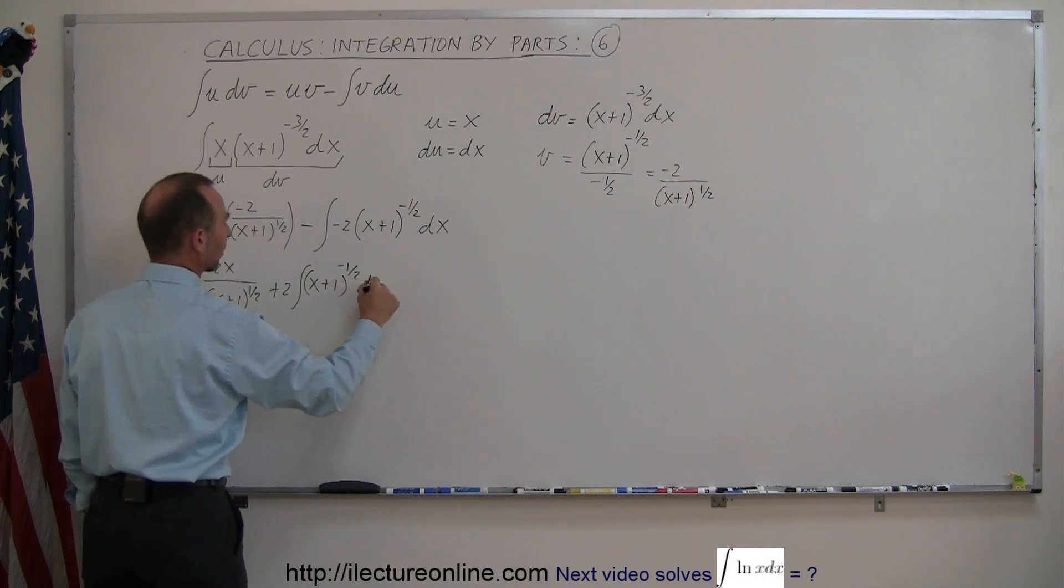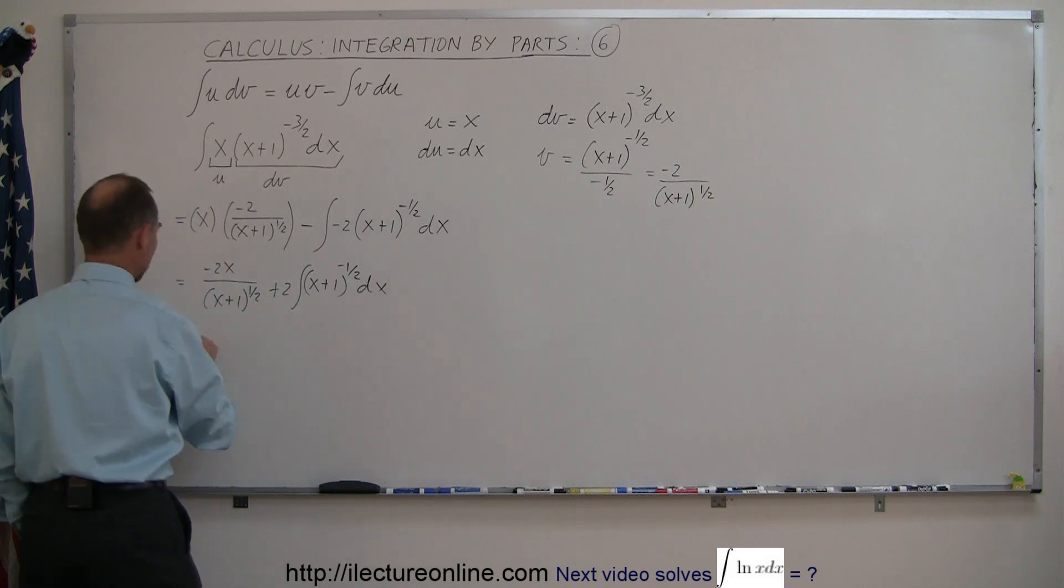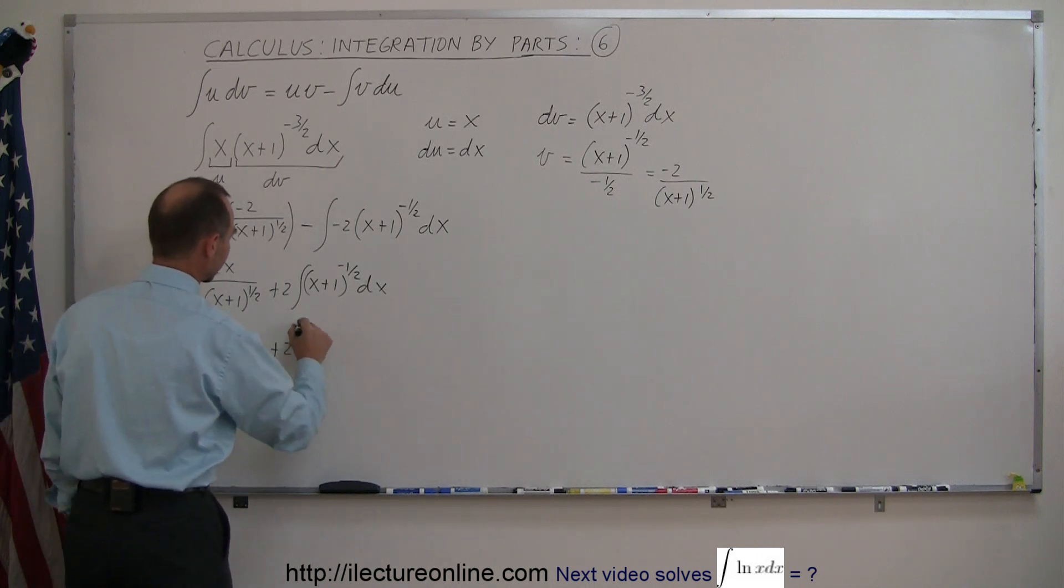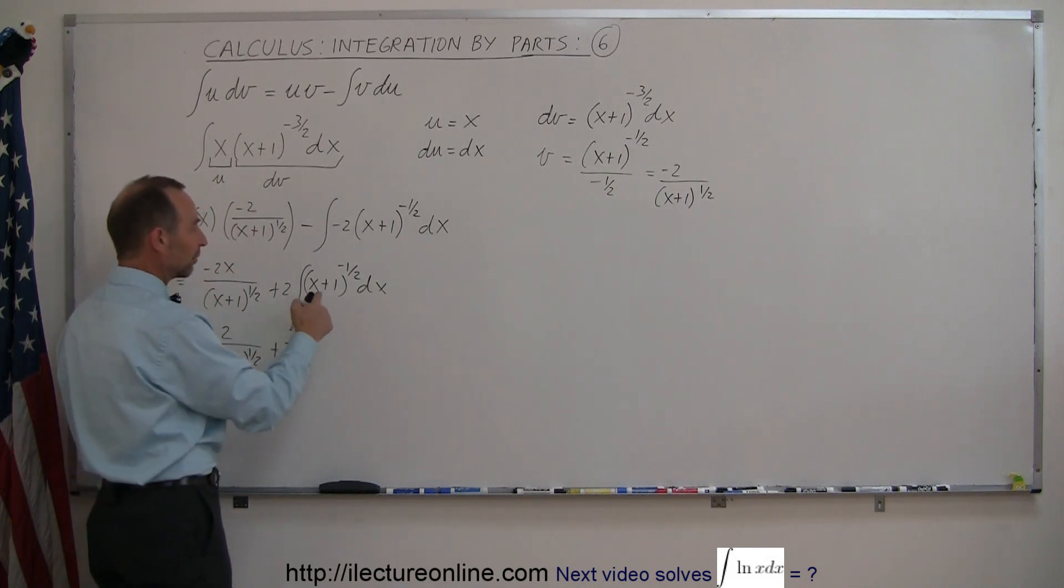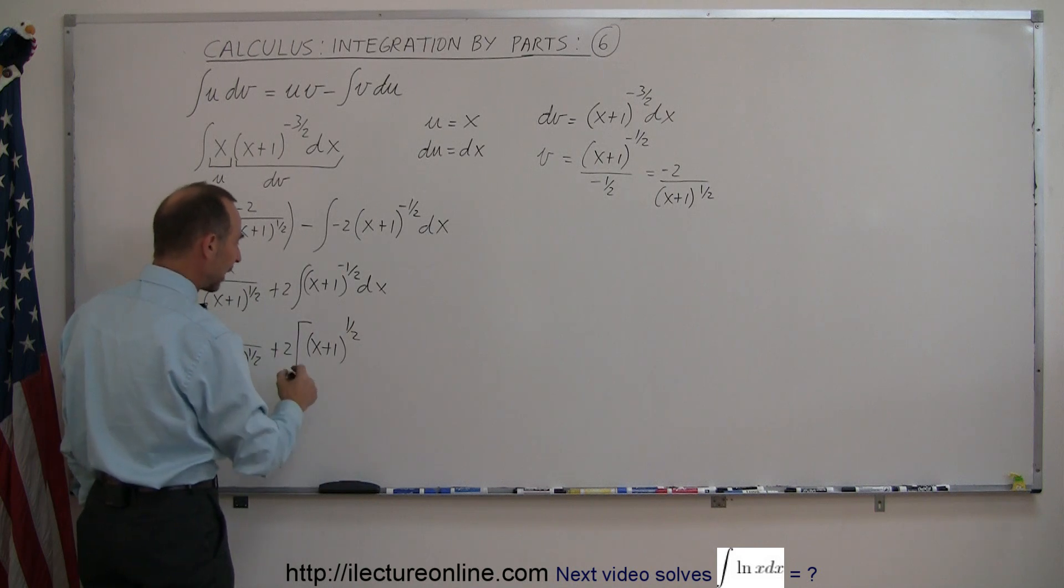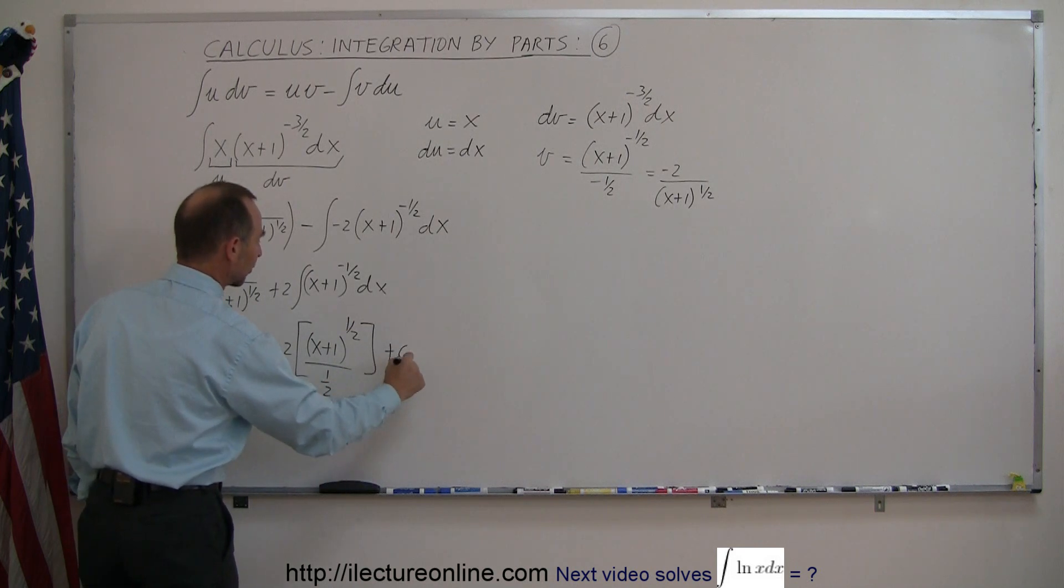So when I integrate this I get minus 2x over (x+1) to the 1 half power plus 2 times the integral. The integral of (x+1) to the minus 1 half is (x+1) to the 1 half power divided by the new exponent which is 1 half, plus a constant of integration.